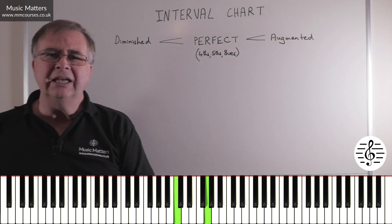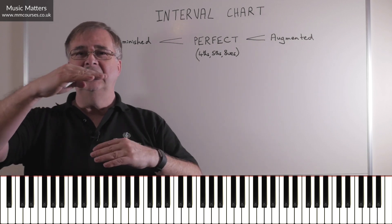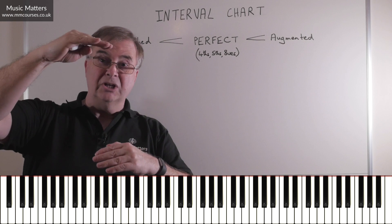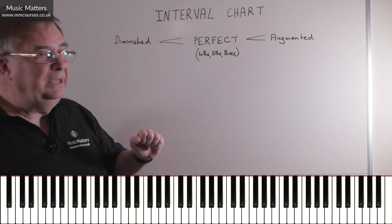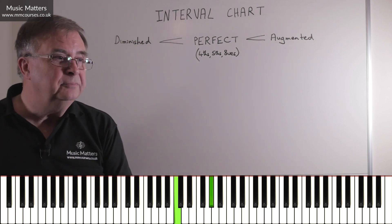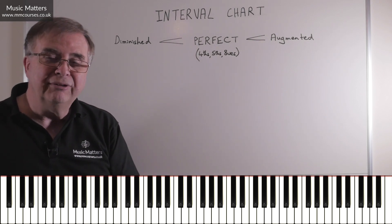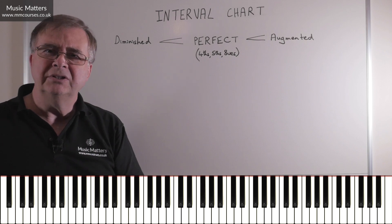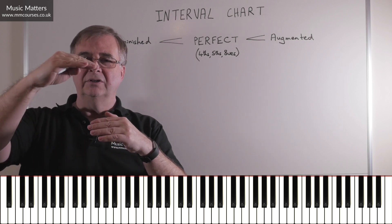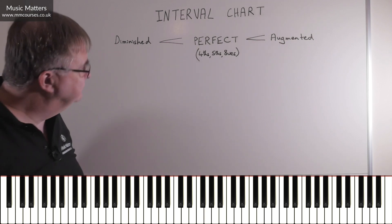Now, instead of C up to G, if it was C up to G-sharp, you can see that C to G has now become C to G-sharp — it's a semitone bigger, the distance between the two notes is further apart. So C to G-sharp must be an augmented fifth. If, however, you go C to G-flat, that's one semitone smaller than a perfect fifth. So there's the perfect fifth C to G, then C to G-flat is a semitone smaller — so that must be a diminished fifth. That's how the perfect intervals work.